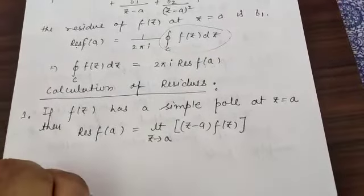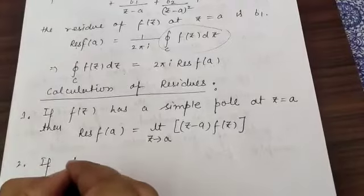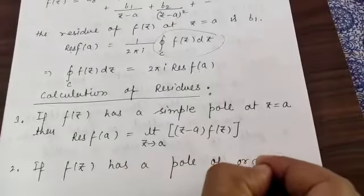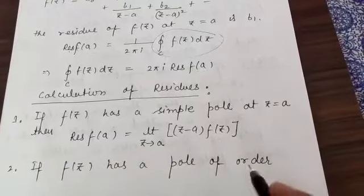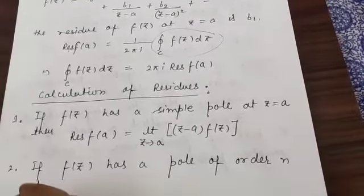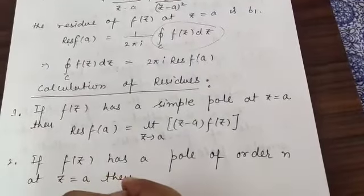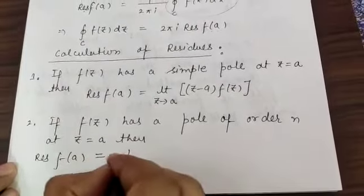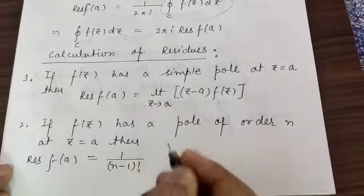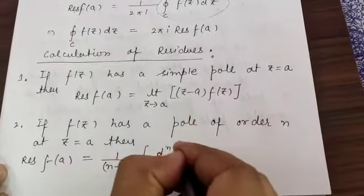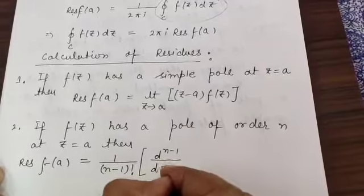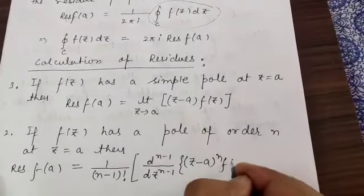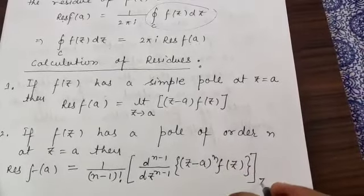Second, if f(z) has a pole of order n at z equal to a — where simple pole has order 1 — then the residue of f at z equal to a is: (1 / (n−1)!) times the (n−1)th derivative of [(z−a)^n times f(z)], evaluated at z equal to a. You can also take the limit as z tends to a after the derivative.